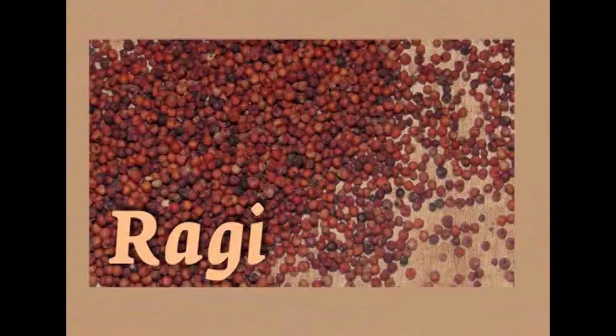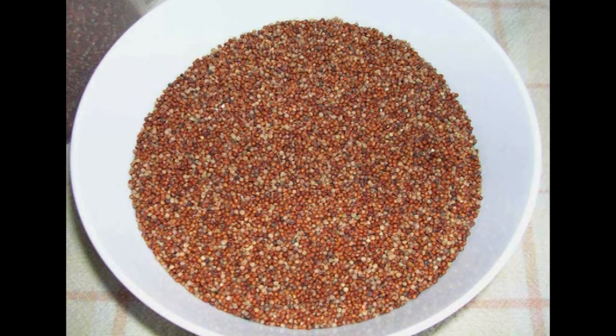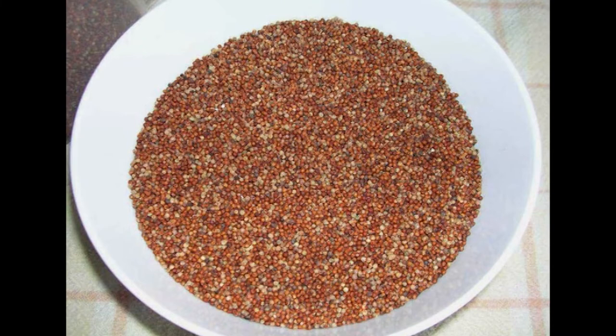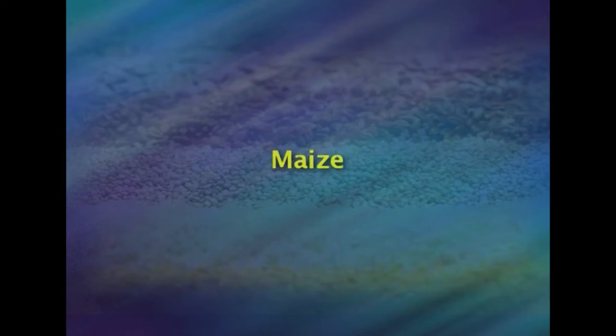Next is ragi, or finger millet. Nutritionally, it is almost as good as or better than wheat or rice. The nutritive value of ragi is better than that of rice and most other cereals. Ragi is rich in calcium, phosphorus and iron — the calcium content is higher than common cereals and millets. It also contains B vitamins but is a poor source of riboflavin. The major proteins of ragi are prolamines and glutelins, and they contain all essential amino acids.